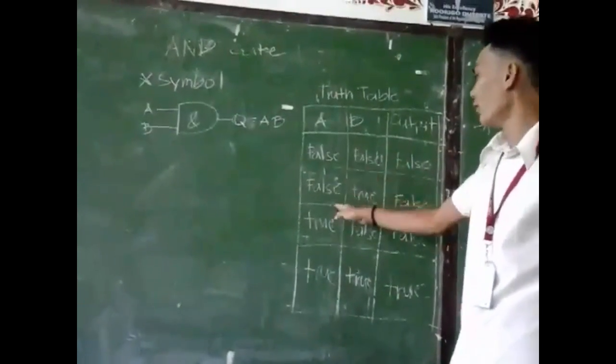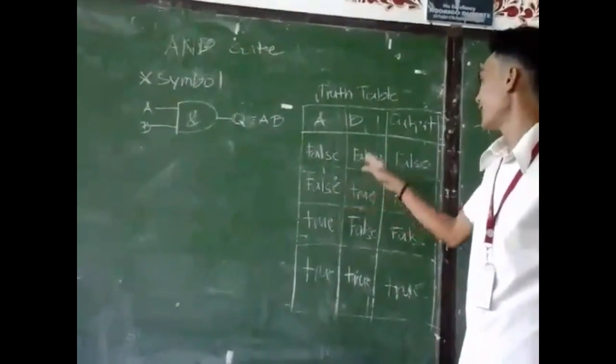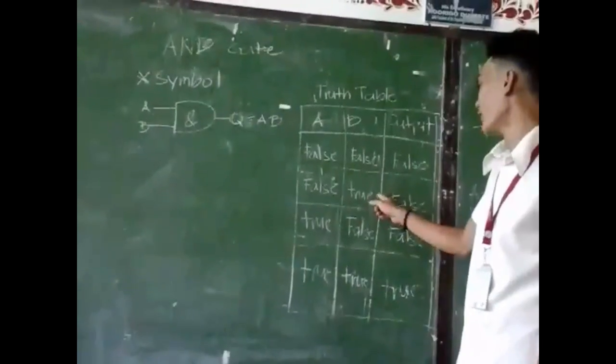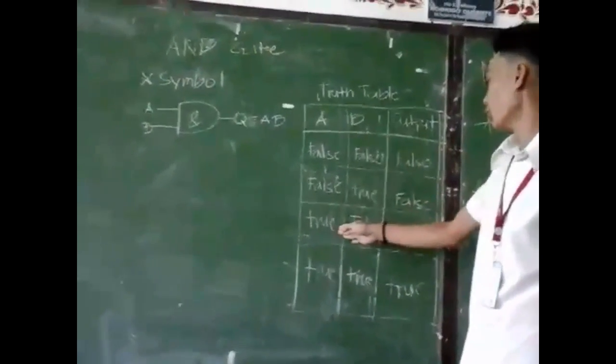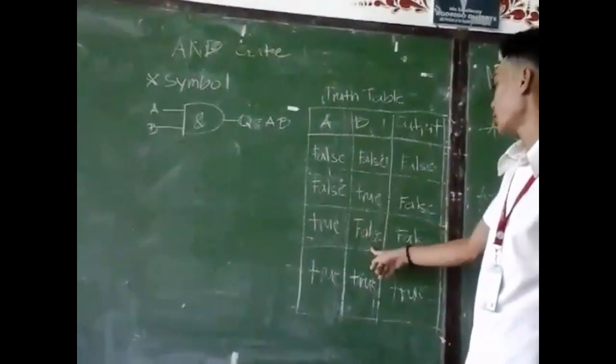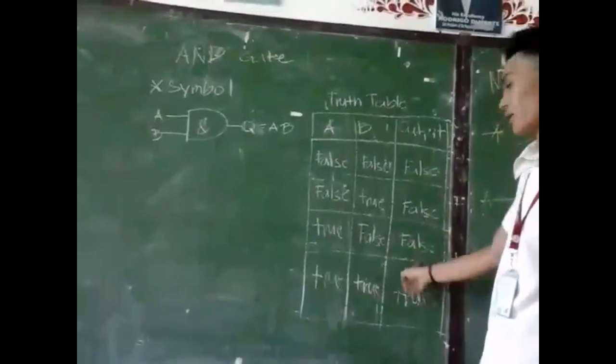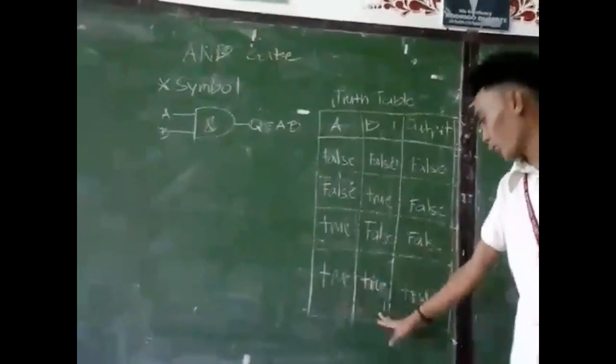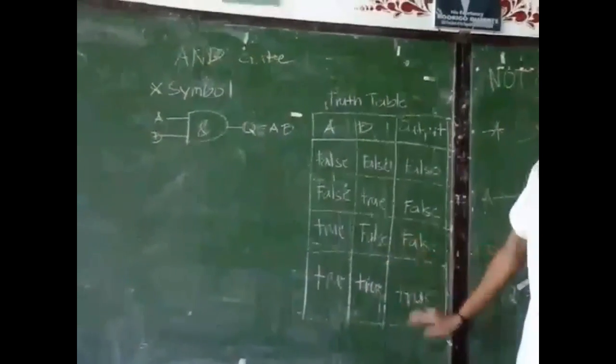If false, true — the output is false. And true, false — the output is false. If both inputs are true, the output is true.